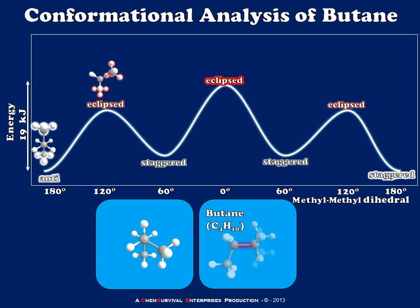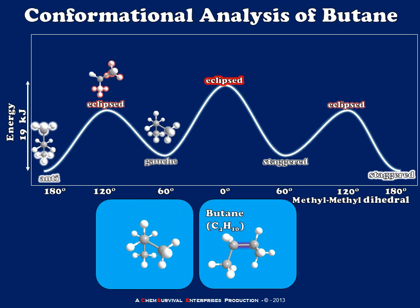My next 60 degree bond rotation leads me to another staggered conformer. But in this staggered conformer, you'll notice that the methyl groups are getting very close to one another. So when we have a situation like this where our bond conformation is staggered but the largest groups are adjacent to one another, we call this a gauche conformation. And it's slightly higher in energy than an anti.